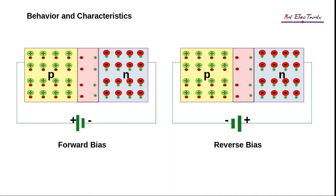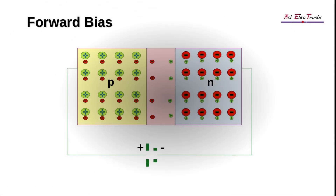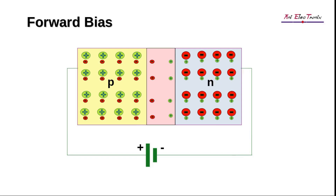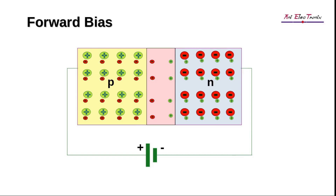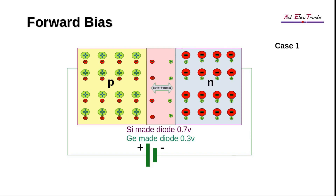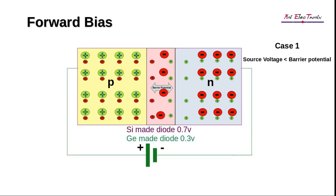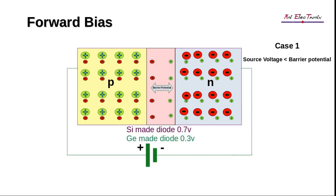Let us now examine the behavior and characteristics of a PN junction diode in forward and reverse bias. The DC source, or battery, forces electrons and holes to flow towards the junction while the diode is connected in forward bias. If the source voltage is less than the barrier potential, the free electrons will not be able to penetrate the depletion layer. The electrons will first enter the depletion region and will be pushed back by the ions towards the N region.